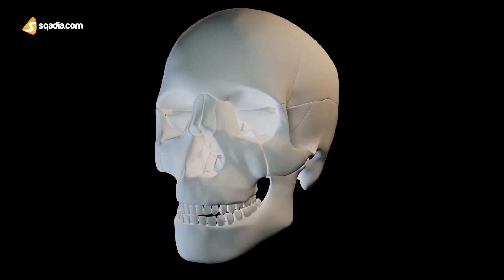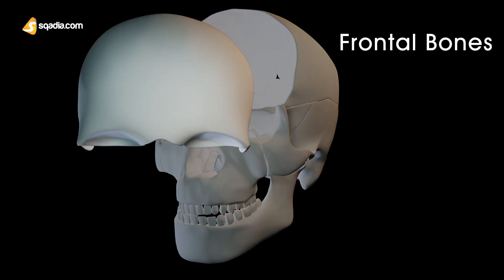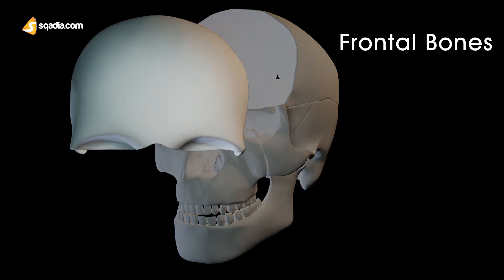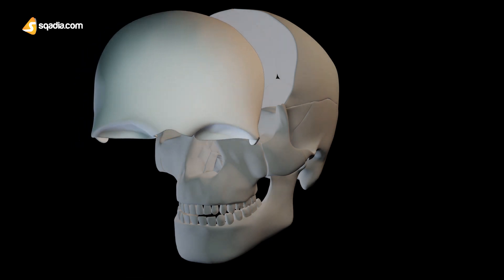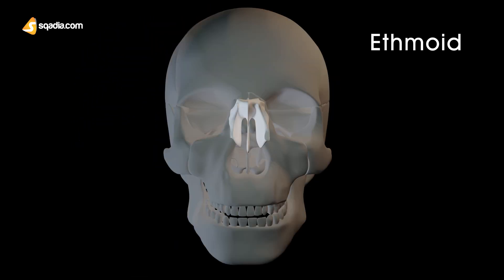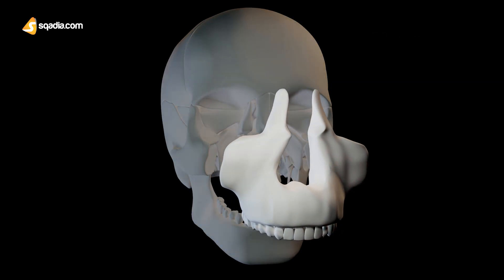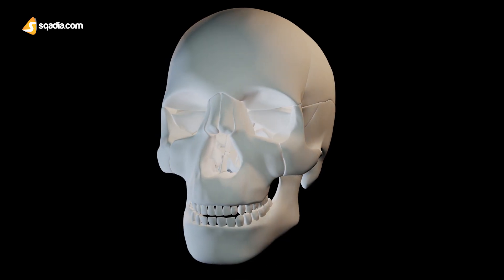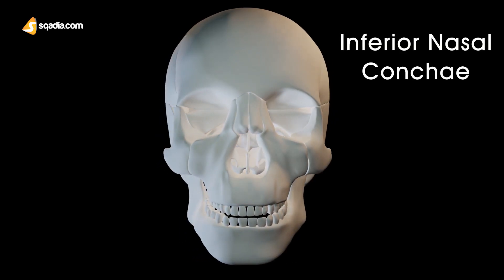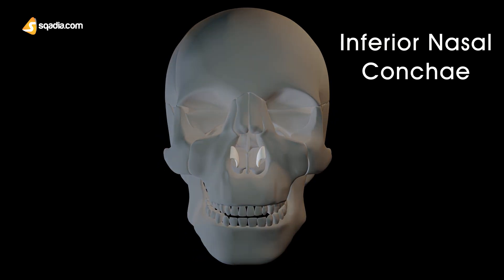Two of these bones make up the cranium, which are the frontal bone and the ethmoid. The other two articulations are with the maxilla and the inferior nasal concha. Always remember that the lacrimal bone forms sutures with all these other bones.